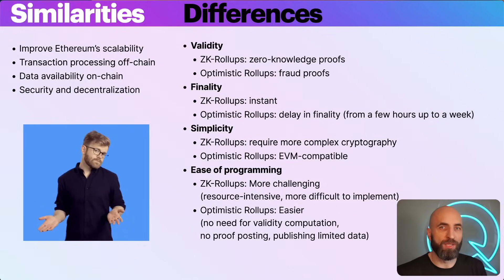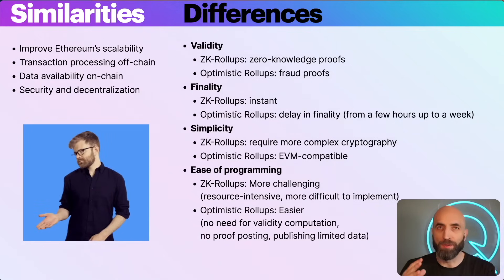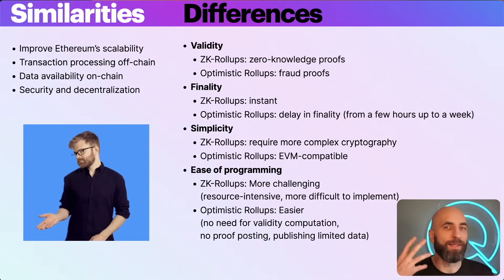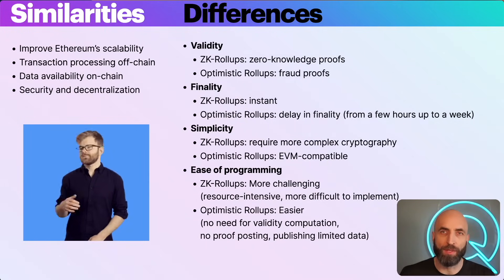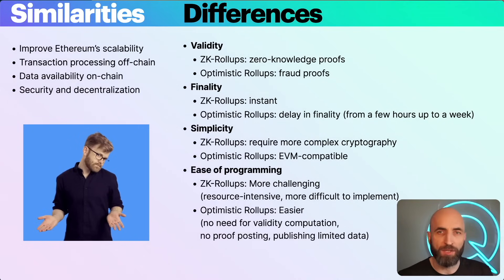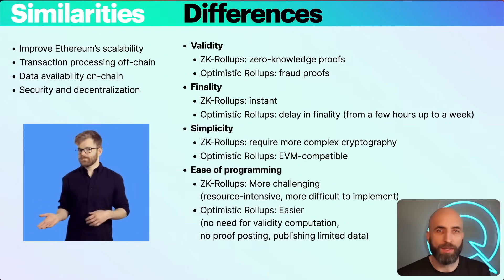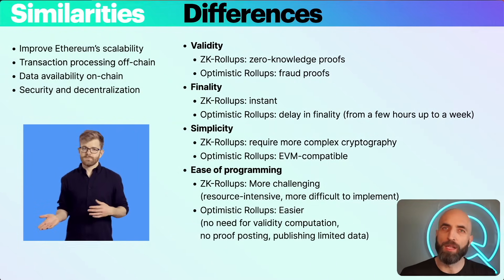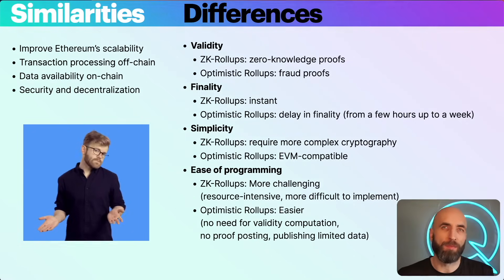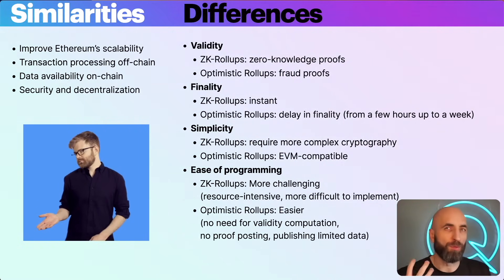As for the differences: ZK rollups use zero-knowledge proofs for validity, while optimistic rollups use fraud proofs. ZK rollups have instant finality, whereas optimistic rollups have a delay in finality due to the challenge period. Depending on the project, the challenge period varies between a few hours and up to a week. ZK rollups require more complex cryptography and are limited to specific types of transactions, while optimistic rollups are EVM compatible and support more general smart contract functionality.